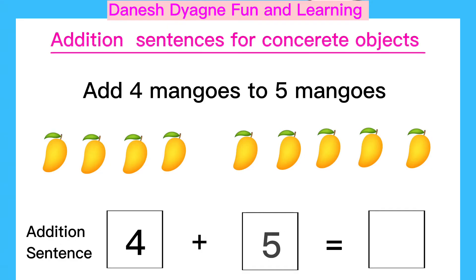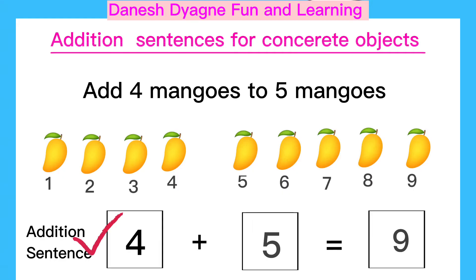Now let's count the total number. One, two, three, four, five, six, seven, eight, nine. So the total number is nine. So the addition sentence is four plus five equals nine.